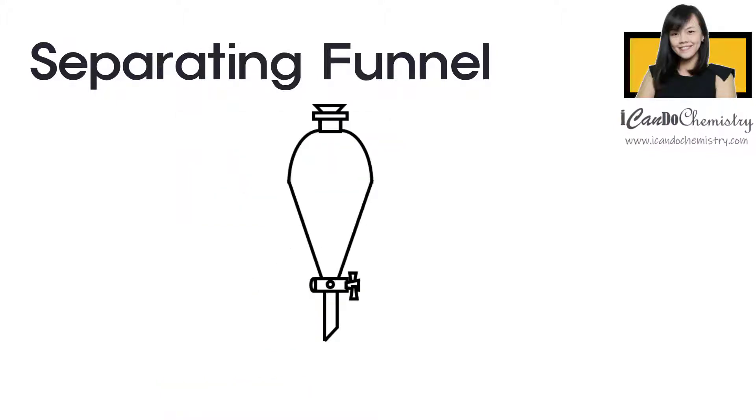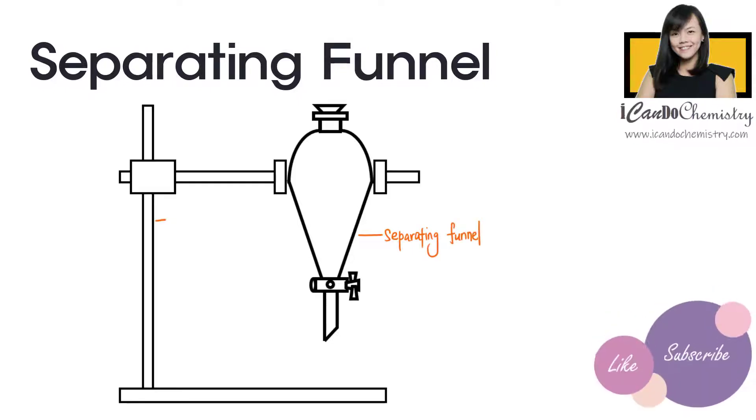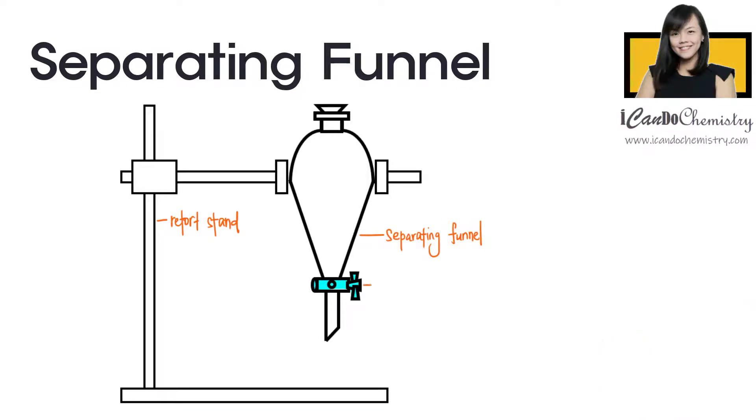Now let's take a look at the setup for separation of immiscible liquid. The main apparatus is separating funnel. We will use a retort stand to support this funnel. The part we use to control the flow of liquid is called the tap.